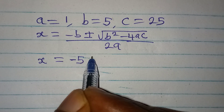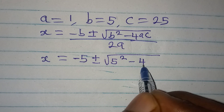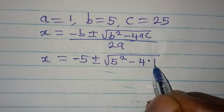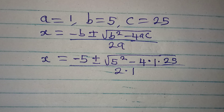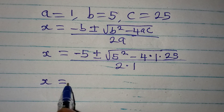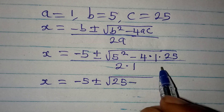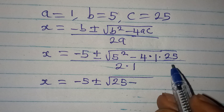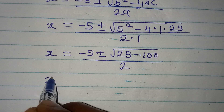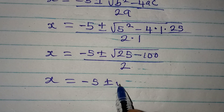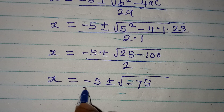Our x will now be: in place of minus b I write minus 5, then plus or minus; in place of b squared I write 5 squared, then minus 4 times a which is 1, times 25, and the whole of this is over 2 times a which is 2. So x is minus 5 plus or minus the square root of 25 minus 100, which gives minus 75, all over 2.